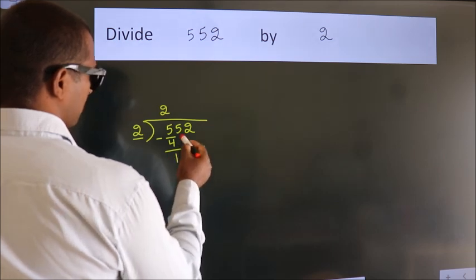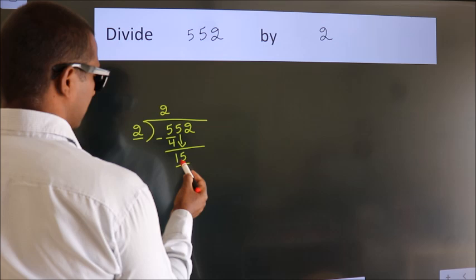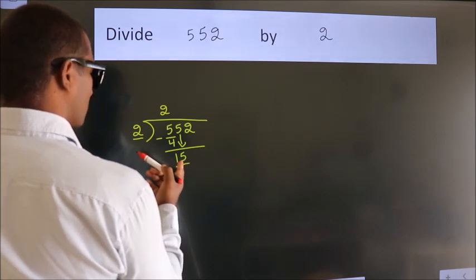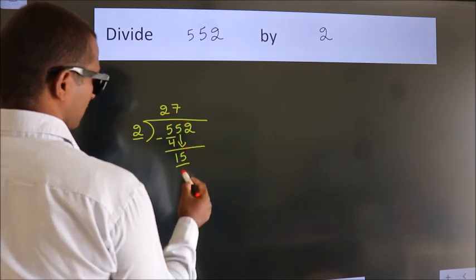After this, bring down the next number. So 5 down, making 15. A number close to 15 in the 2 table is 2 times 7, which is 14.